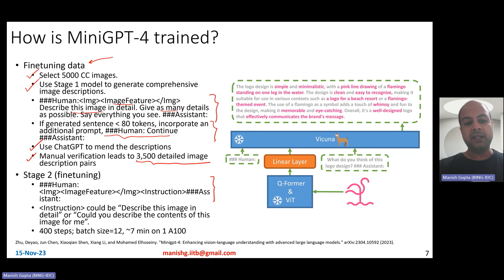Using a very simple prompt, human, and then the image. So, human, the image, and the image features that are extracted using QFormer and VIT, and then the instruction. Now, the instruction could be any of these simple sentences: describe this image in detail, or could you describe the contents of this image for me, or what do you think of this image, and so on and so forth. Now, this fine-tuning step really takes just about seven minutes on one A100, so only seven minutes on an A100 machine. And that's how, basically, you get an awesome fine-tuned model.